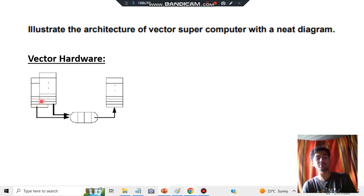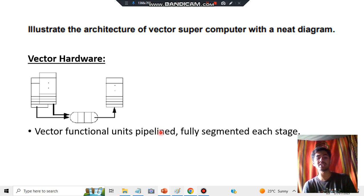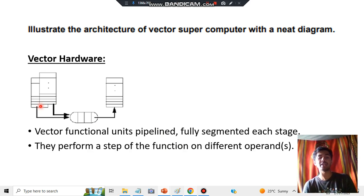Here, multiple processors are there. All these processors are pipelined into a single thing, and the answer is stored in another register. This is called vector hardware. What is the function happening here? The function is it uses the pipeline fully segmented at each stage. These are what are called segments. These small lines and the spaces between them are called segments. All these segments are combined and those are used as a pipeline. And they perform a step of functions on different operands. Different operands are there and they perform a set of operations on that.